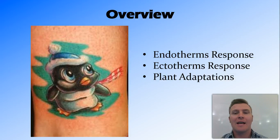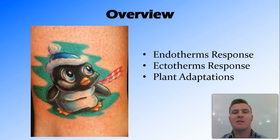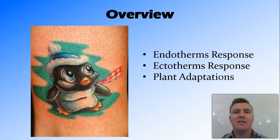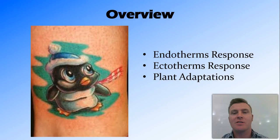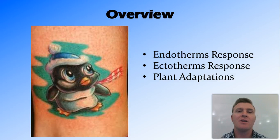In this video we've looked at the response of endotherms to temperature: heat with the kangaroo licking its paws, and cold with the penguins huddling together. We've looked at ectotherms in magnetic termites and how they deal with heat by having flat mounds orientated north-south. We've also looked at a whole range of plant adaptations that suit them to their environment and the temperatures found there.